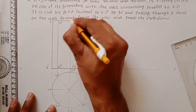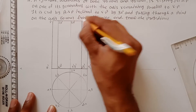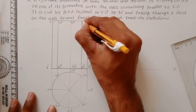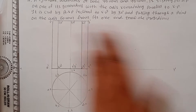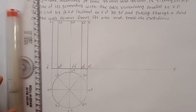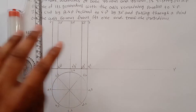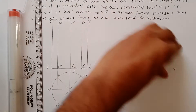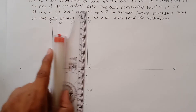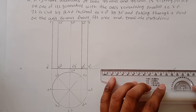Continue labeling top points: 3-dash, 7-dash, 4-dash, 6-dash, and 5-dash. Since the cylinder is resting with its generator, transfer the generator point. Measure 90mm for the generator length. This gives us one of the generators — point E-dash and 5-dash.